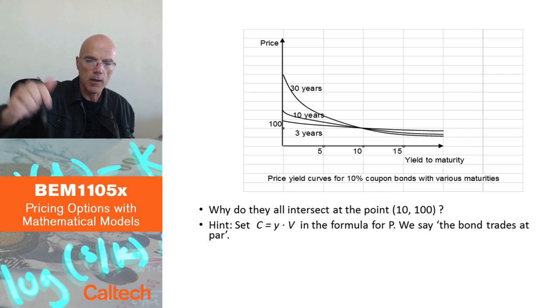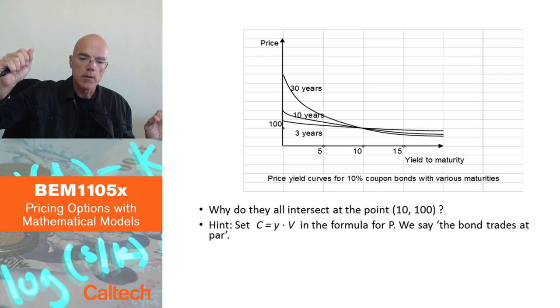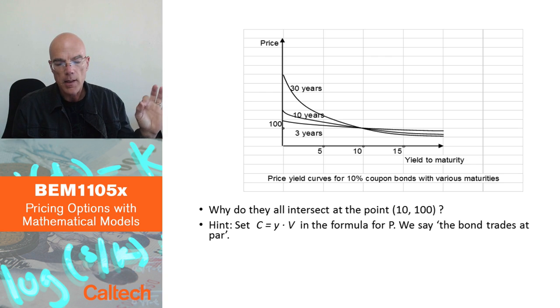The price is exactly equal to what is going to be paid at the end, the face value. I'm assuming here the face value is 100. So the price is going to be exactly the face value. It pays 100 at the end, and it costs 100 now. The interest is paid exactly through coupons.